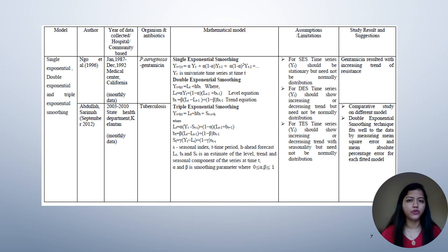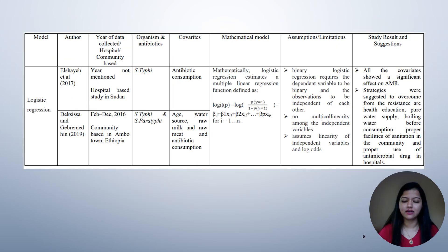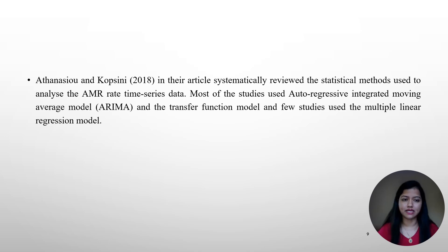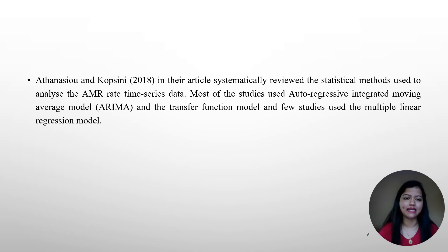Similarly, few of these studies also used exponential smoothing method, and few also used logistic regression. In the year 2000, Etnisius and Kopsini conducted a systematic review to understand the models used in the area of AMR. They found that most studies used autoregressive moving average models, followed by transfer function models, and few used multiple linear regression.